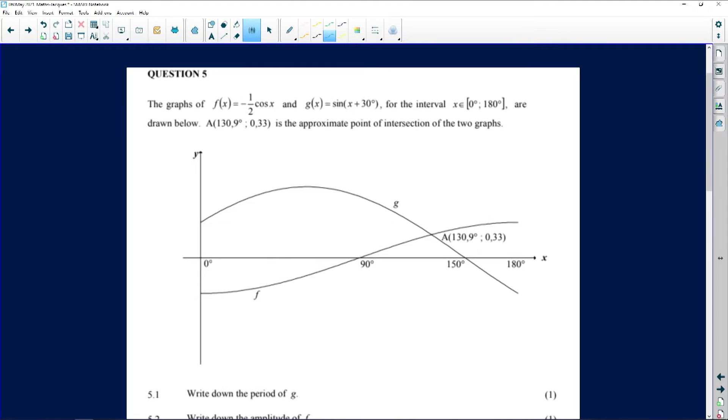Let us have a look at question five. Question five deals with two graphs. The first graph is the cosine graph and the second one is the sine graph.